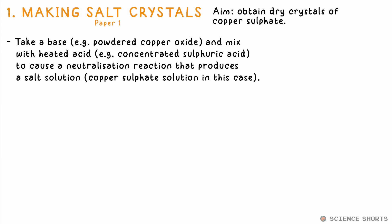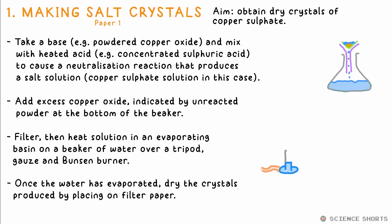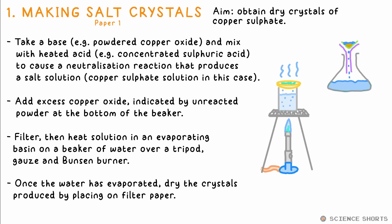Chem 1: making salt crystals. Nice and easy — we just take a base like copper oxide and an acid like concentrated sulfuric acid. A base essentially just means something that can neutralize an acid. We heat the acid first in a beaker, then add excess copper oxide. You can tell it's in excess when there's some unreacted powder at the bottom. The neutralization reaction makes copper sulfate solution. We filter the unreacted copper oxide out, then gently heat the solution in an evaporating basin over a beaker of water on a tripod above a Bunsen burner flame, and you're left with solid crystals of copper sulfate.